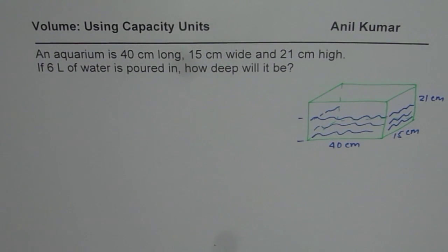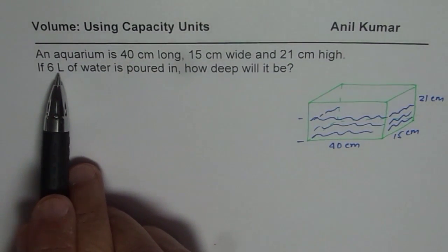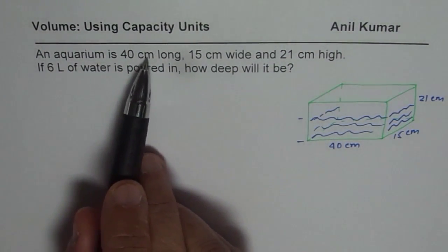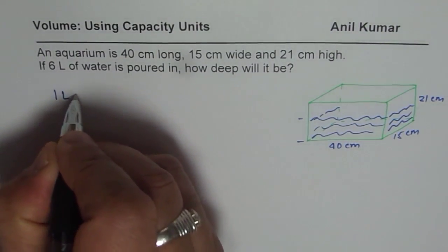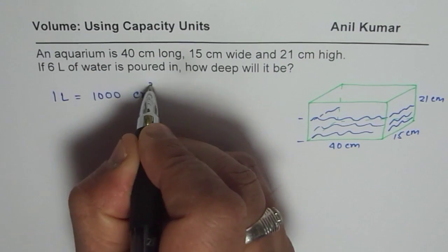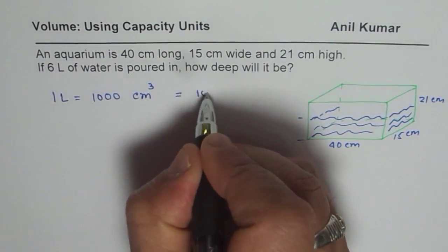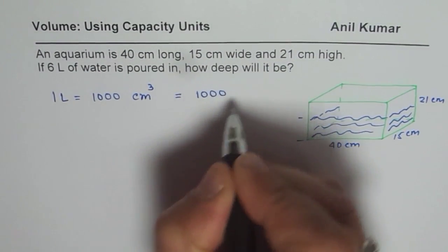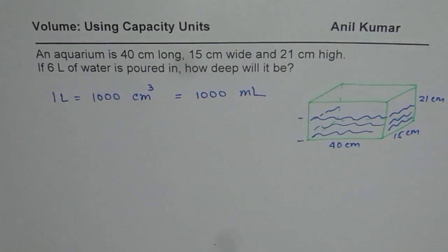Here is my suggestion. First, let us convert 6 liters to centimeter cube. We know 1 liter equals 1000 centimeter cube. At times we also use milliliter — it could be given as 1000 milliliter also. So centimeter cube is kind of milliliter.